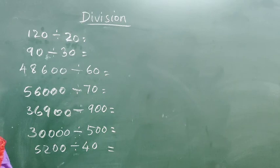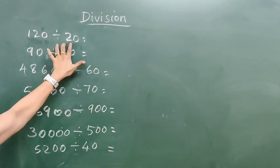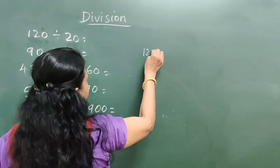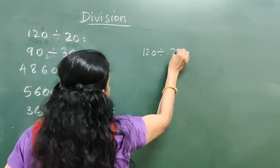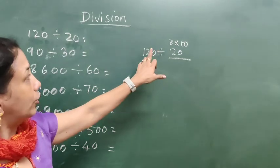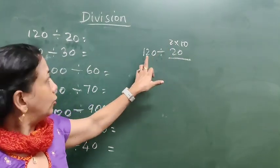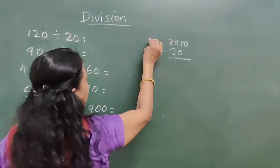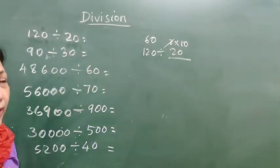Here we have 120 divided by 20. So 20 means 2 into 10. See, 120 divided by 20 — this 20 means 2 into 10. So you first divide 120 by 2. What is 12 divided by 2? That gives 6, so here we get 60.